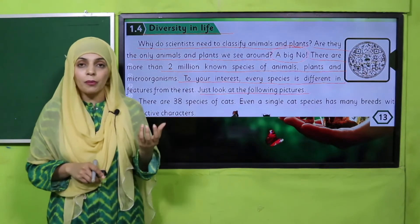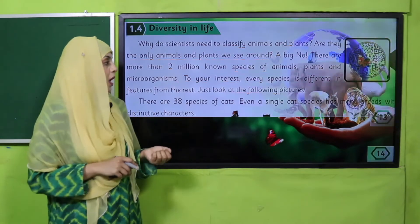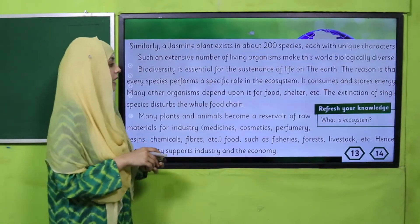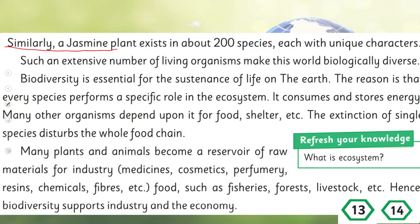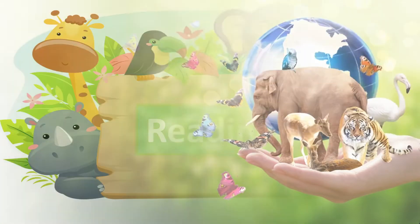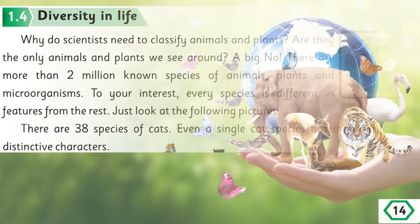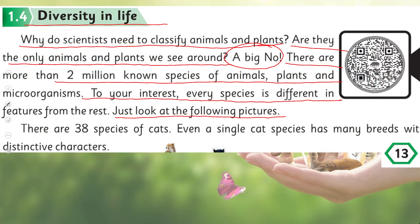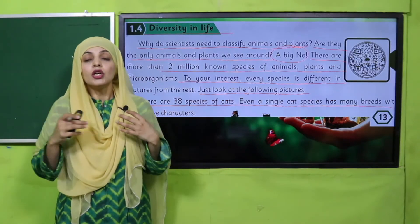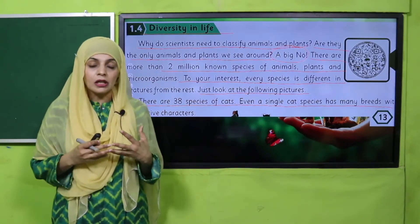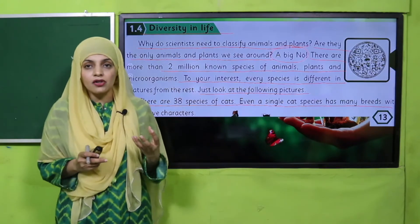All living things are different from each other in different features. Similarly, there are 38 species of cats, and even a single cat species has many breeds with distinctive characters. If you consider cats, there are 38 species, and within those the breeds are different — some have very long fur, some have very short fur. So within one species there can be tremendous variation.